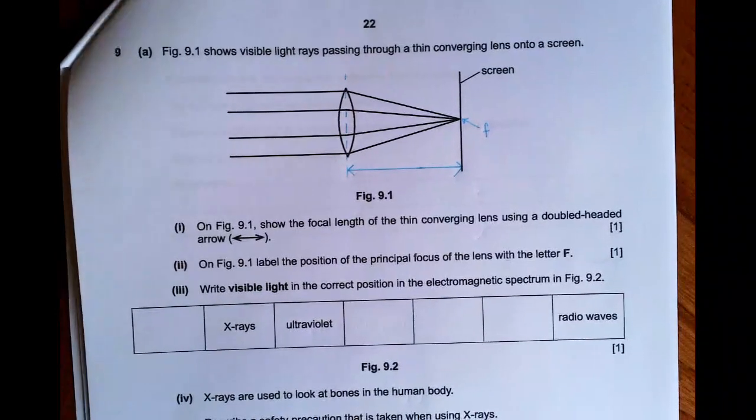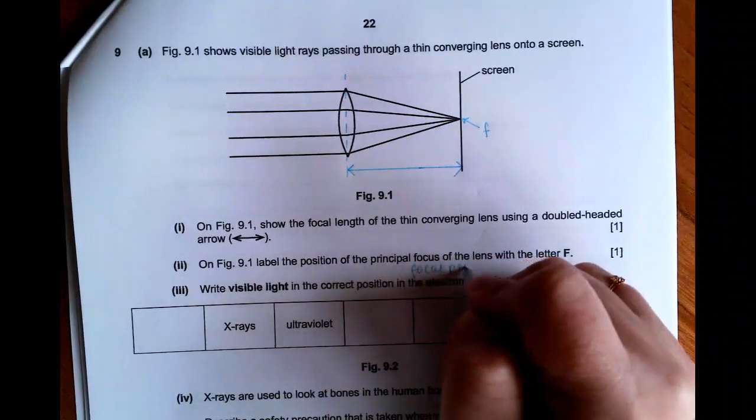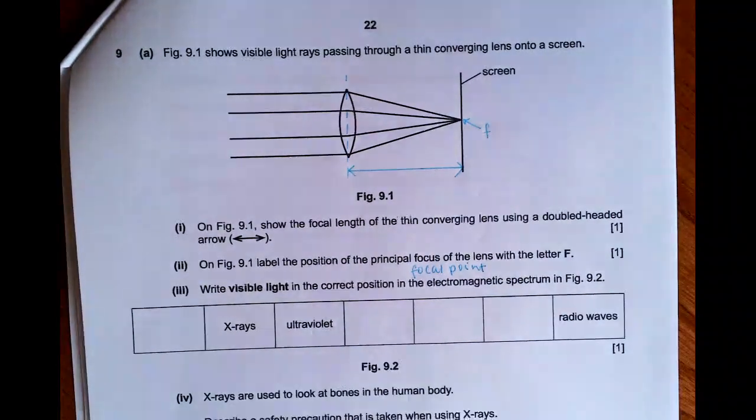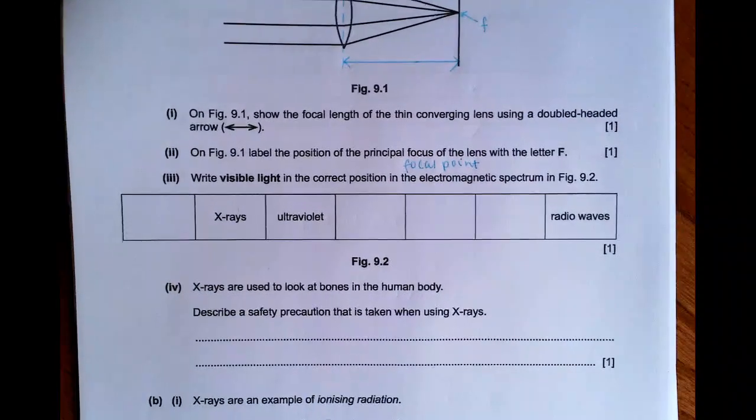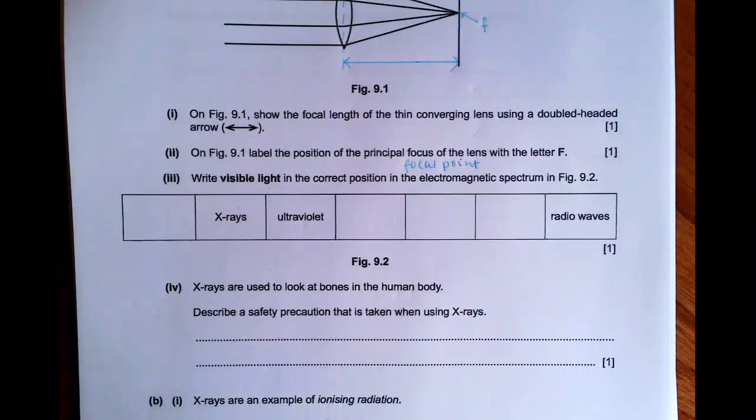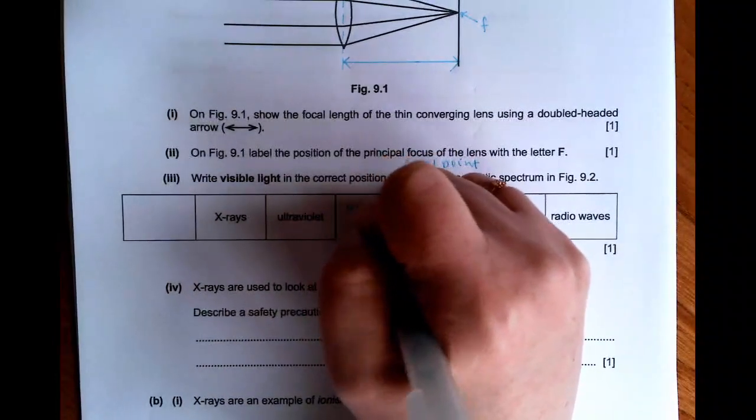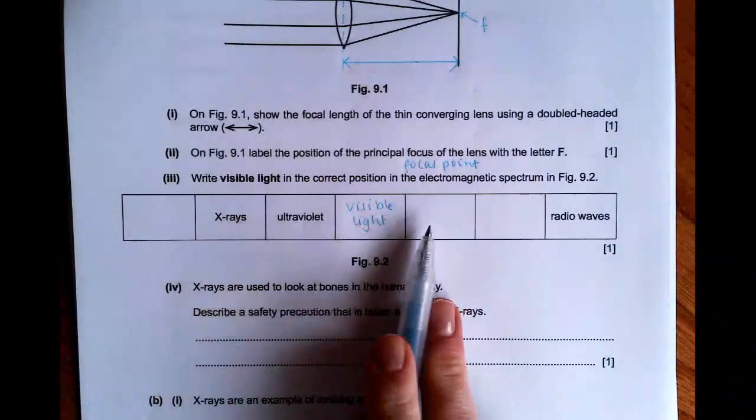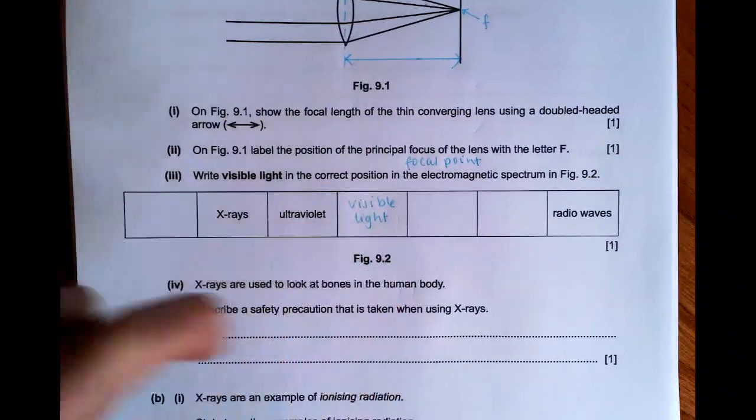Label a position of the principal focus, this is the focal point. That's what that means. With the letter F. And then another thing you have to do is add visible light into the correct position. So this is the electromagnetic spectrum. Visible light is right next to ultraviolet on the spectrum. So we're going to put visible light in here. And then you've got infrared, microwaves, gamma rays. But visible light goes in that middle one there.